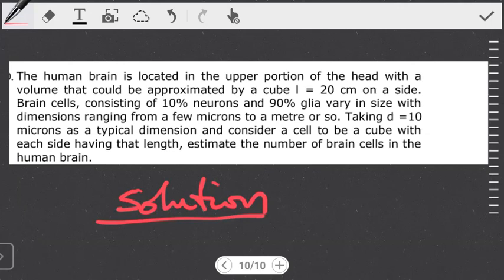There are a number of ways we can determine the number of brain cells, but the method we're going to use here is based on the fact that the question talks about an estimation of the volume of the brain and also the volume of the cell. The brain is made up of cells — those are the brain cells. You have one brain cell on top of the other. When we get all the brain cells present in the brain, that is what gives us the volume of the entire brain, assuming there are no spaces and everything inside is basically just brain cells.